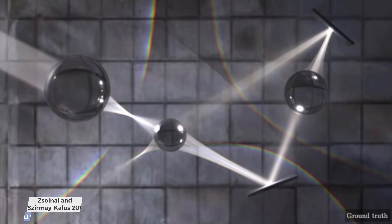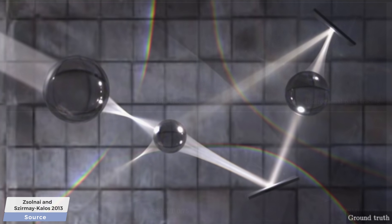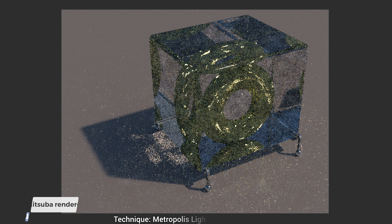Now let's try a better technique called metropolis light transport. This method is the result of a decade of research and is much better in dealing with difficult scenes. This particular variant is a proud Hungarian algorithm by a scientist called Csaba Kelemen and his colleagues at the Technical University of Budapest. Here is a snippet of our earlier paper on a similarly challenging scene — this is how the OK path tracer did, and in the same amount of time, this is what metropolis light transport, the better technique, could do. This was a lot more efficient, so let's see how it does with the torus.